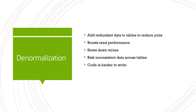Denormalization is where you go against standard best practices for relational databases and add redundant data to tables, reducing the number of joins needed and improving read performance. The downside is that you're sacrificing write performance and risking inconsistent data across tables. If the same data lives in two tables, you have to ensure that writing to one also updates the other — otherwise you get inconsistency, which can be a major issue for certain applications. The code also becomes harder to write because you have to handle updating that data everywhere it exists.